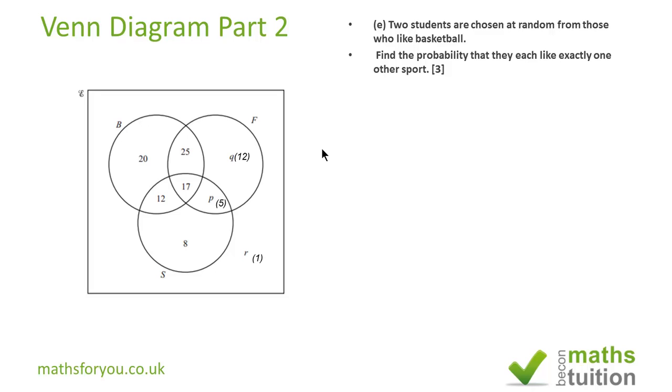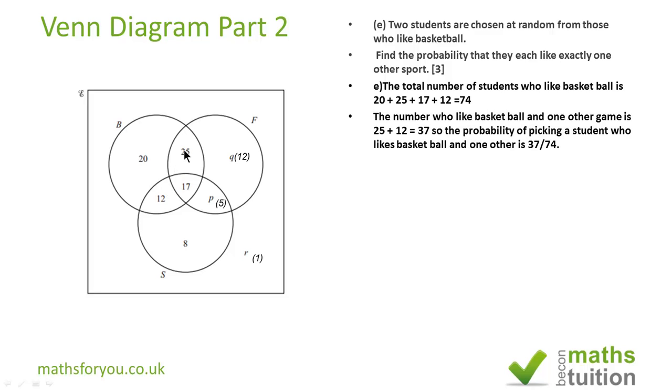Not all three, just one other sport. So in which case, there are 74 students in total who like basketball. Now of those, 25 like basketball and football and 12 like basketball and swimming. So the total number of students who like basketball and one other is 37.